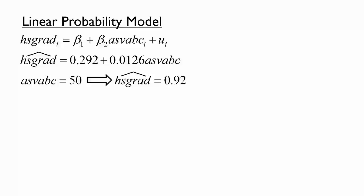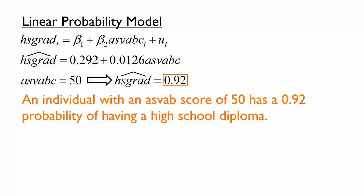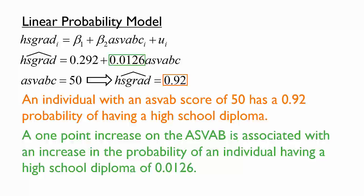Remember that a predicted value is also an expected value. If 100 people have an ASVAB score of 50 and they each have a predicted value of HSgrad of 0.92, then we would expect that 92 out of those 100 individuals have a high school diploma. In other words, the predicted value tells us that an individual with an ASVAB score of 50 has a 0.92 probability, or a 92% chance, of having a high school diploma. This realization should also help us interpret the slope coefficient. A one-unit increase in ASVAB C is associated with a 0.013 unit increase in HSgrad, or equivalently, a 0.0126 increase in the probability of having a high school diploma.